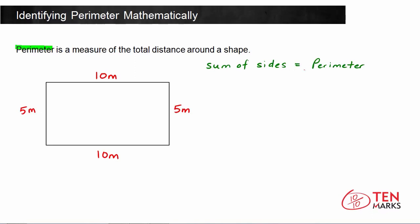So now, the sum of the sides equals the perimeter. What we would do is add together all four sides to find the perimeter. Now, the sum of these four sides would give you the value of the perimeter.